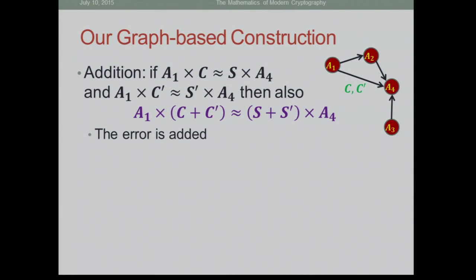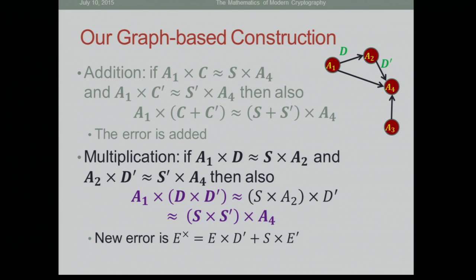For addition: if A1 times C equals S times A4, and A1 times C' equals S' times A4, then adding the matrices gives an encoding of the sum of the S's. For multiplication: if A1 times D equals S times A2, and A2 times D' equals S' times A4, then multiplying D and D' — opening the parentheses — gives something close to S times S' times A4. The error has a more complicated form: one error times the encoding, plus the other error times the plaintext. So both the encoding and the plaintext need to be small.